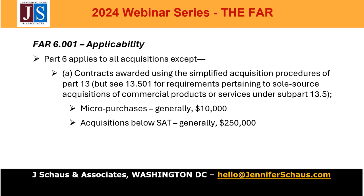Part 6 reaches out to FAR Part 13 for simplified acquisition procedures. You also must promote competition to the maximum extent practicable and cannot solicit quotations based on personal preference or restrict solicitations to suppliers of widely distributed brands. So there are controls on how smaller procurements are conducted, but they're governed by FAR Part 13 rules, not FAR Part 6 requirements.